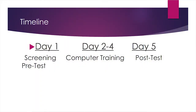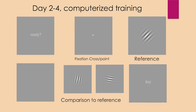For days two to four, they would come in and do computer training. The computer training was still a similar procedure, just a little bit different. This is what their screens looked like for days two to four. They had the reference, but for the comparison they had to be able to tell us whether the lines were more to the left or more to the right compared to the first one.